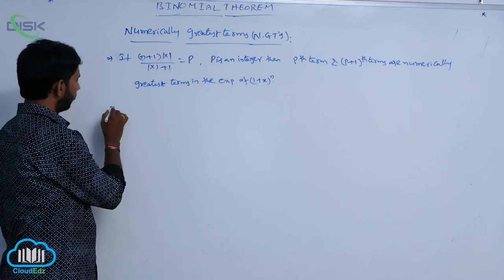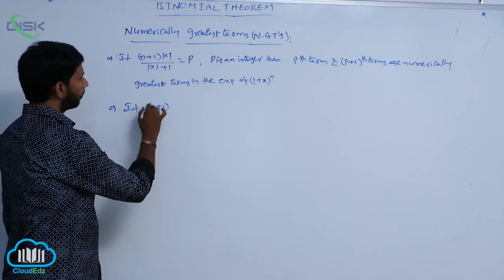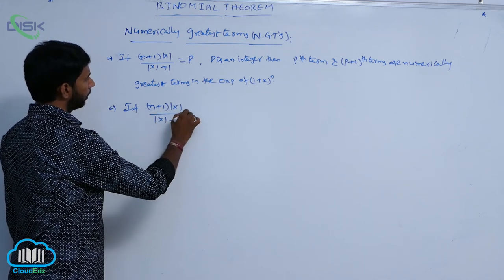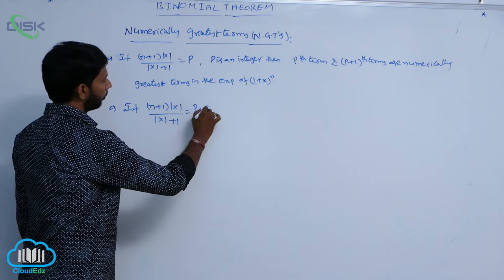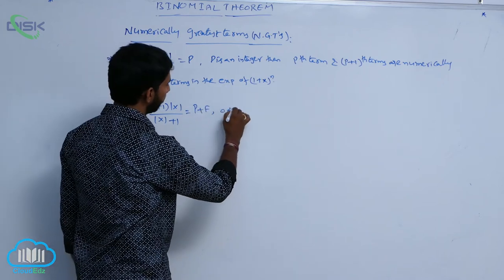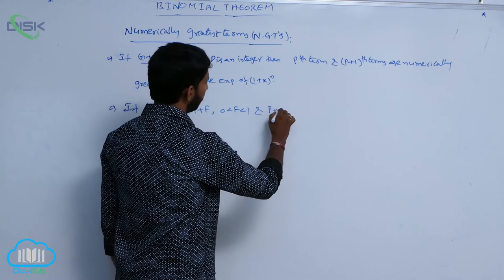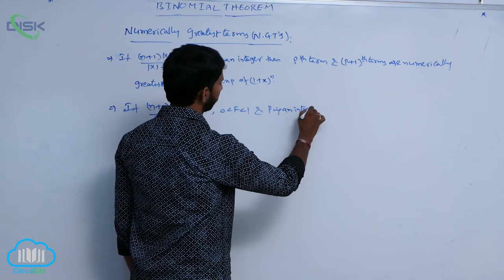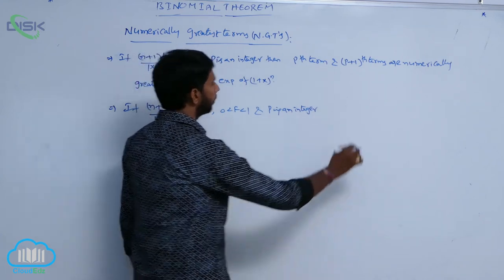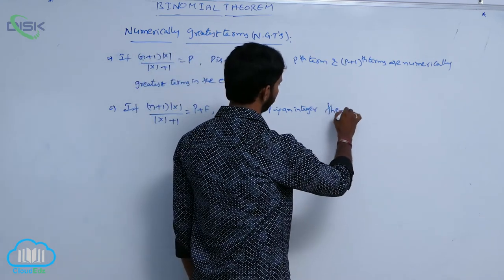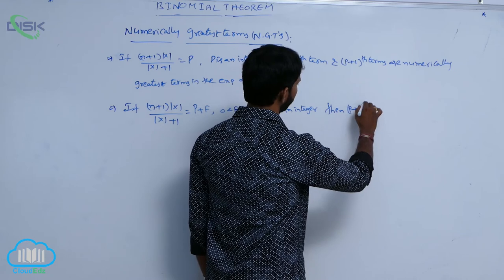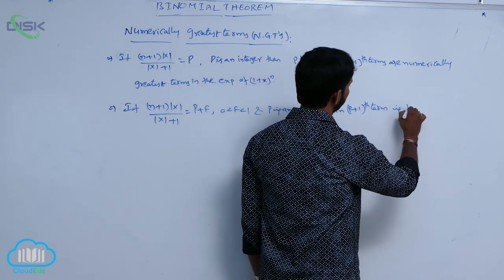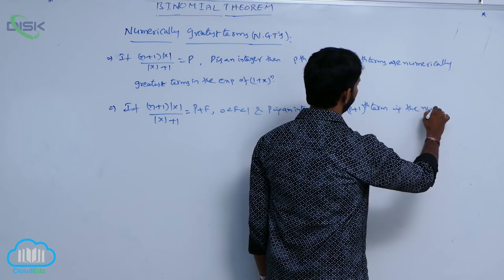For the second case, if (n+1) times mod x by mod x plus 1 is equal to P plus F, where 0 is less than F less than 1 and P is an integer, then the P plus 1-th term is the numerically greatest term.